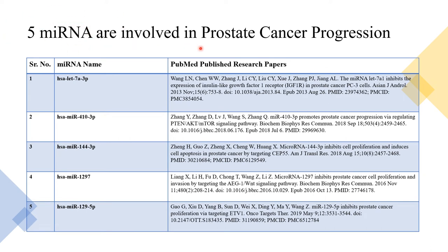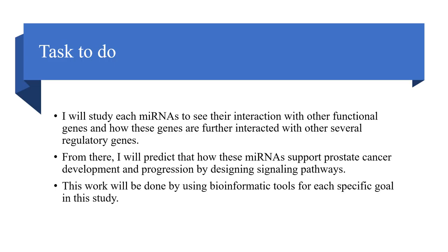From the previous table, I selected five microRNAs that are particularly involved in prostate cancer progression. The five microRNAs are: hsa-let-7a-3p, hsa-mir-410-3p, hsa-mir-144-3p, hsa-mir-1297, and hsa-mir-1295. Here are links to published research papers showing the direct involvement of these microRNAs in prostate cancer progression.